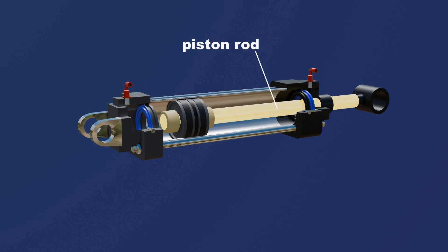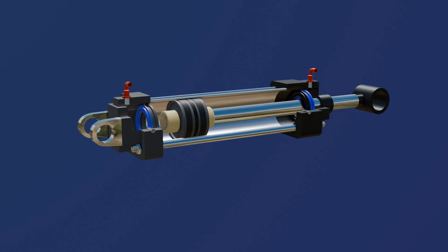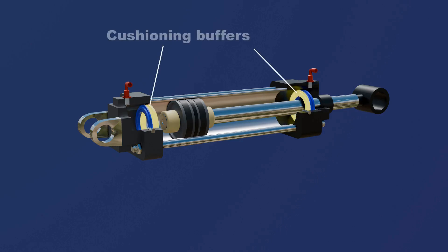The piston rod transfers the force generated by compressed air in the cylinder to the external components or mechanisms that need to be moved or operated. When the piston reaches the end of its stroke, cushioning buffers come into play.